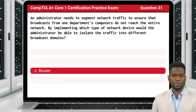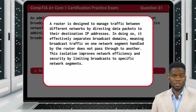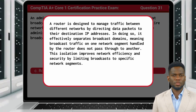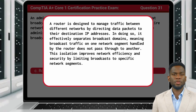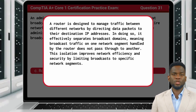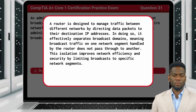The answer is C. Router. A router is designed to manage traffic between different networks by directing data packets to their destination IP addresses. In doing so, it effectively separates broadcast domains, meaning broadcast traffic on one network segment handled by the router does not pass through to another. This isolation improves network efficiency and security by limiting broadcasts to specific network segments.